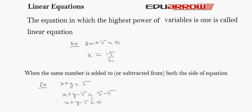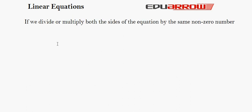Here, we subtracted 5 from both sides and the equation is not affected. Similarly, the equation is not affected if we divide or multiply both sides of the equation by the same non-zero number.